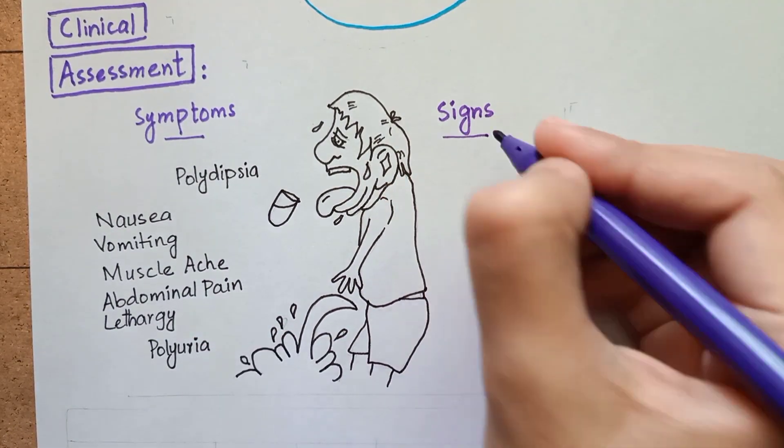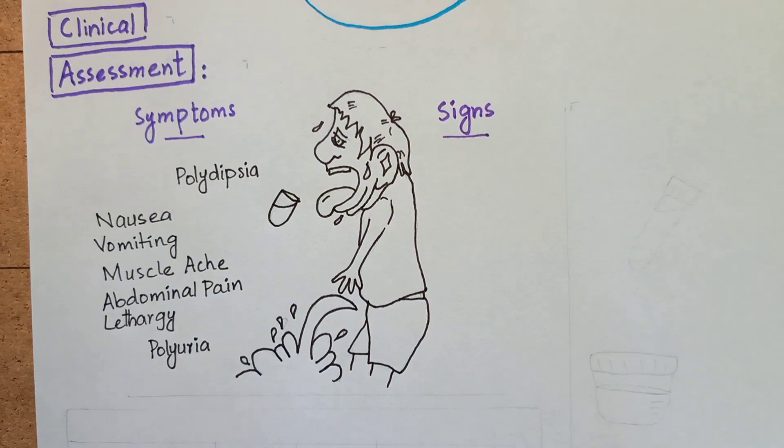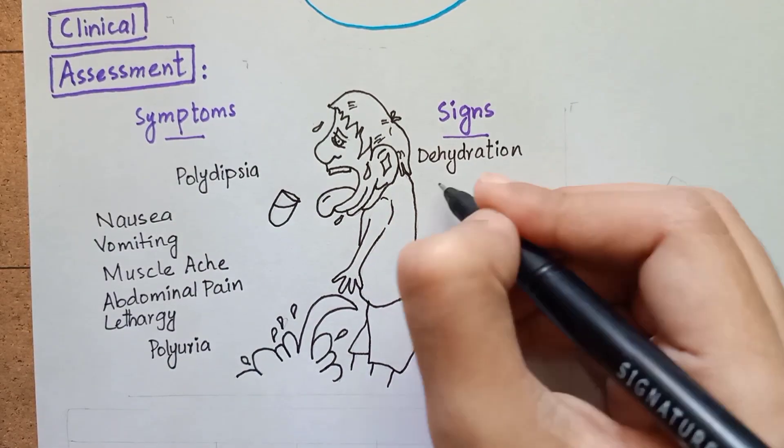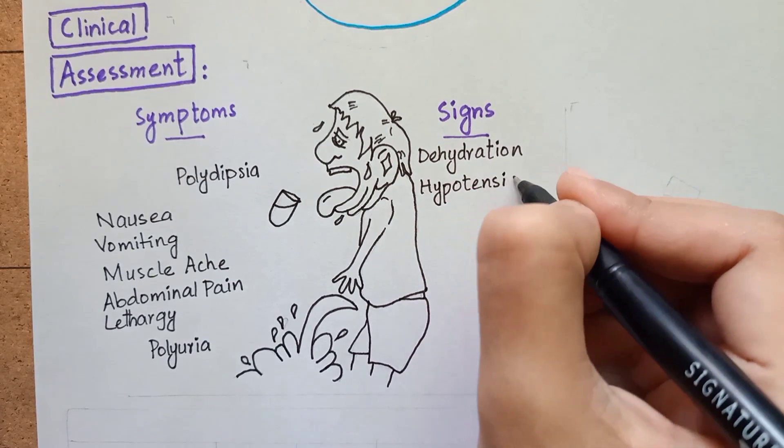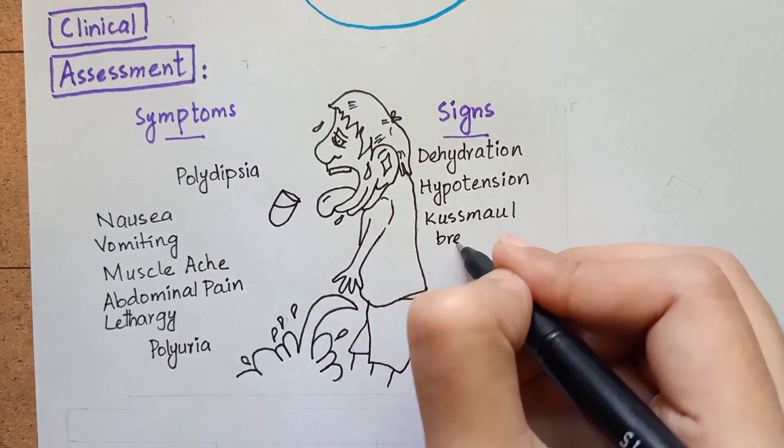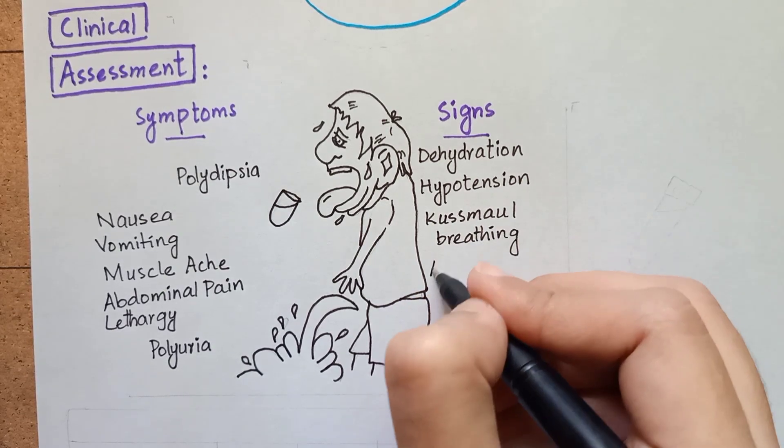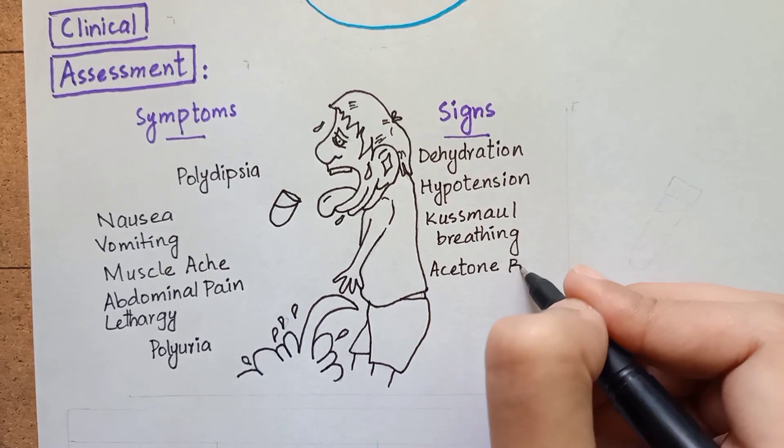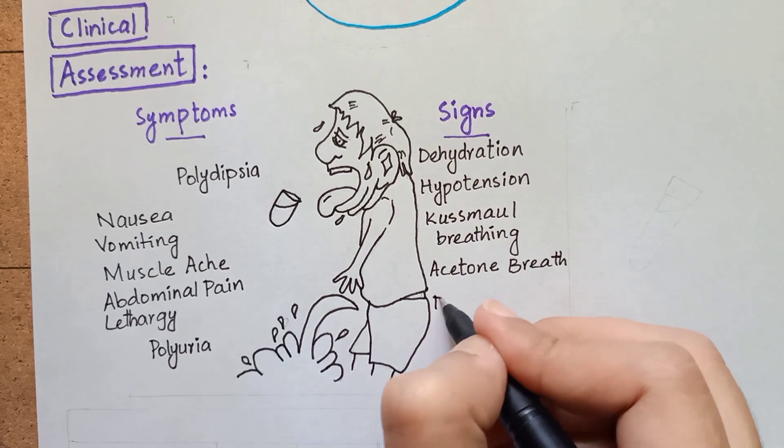The signs of diabetic ketoacidosis on the other hand are dehydration, hypotension, air hunger that can be seen as small breathing, smell of acetone in breath, hypothermia, drowsiness, and even coma.